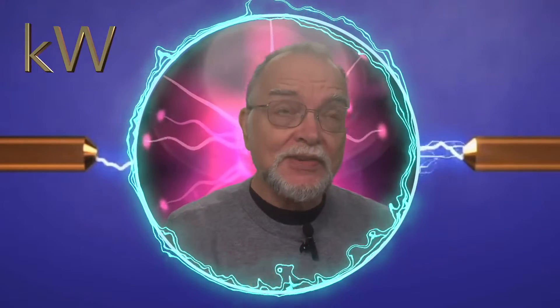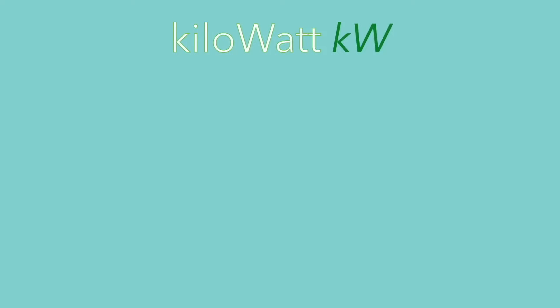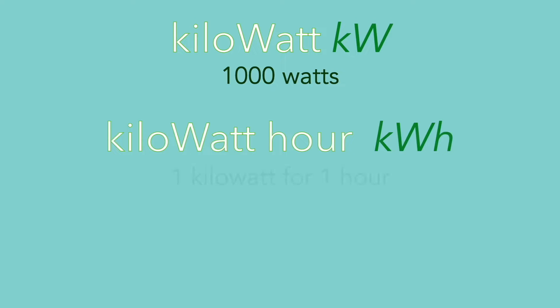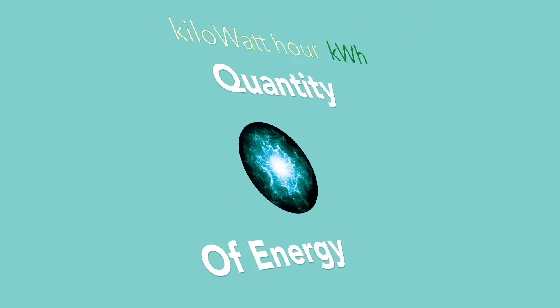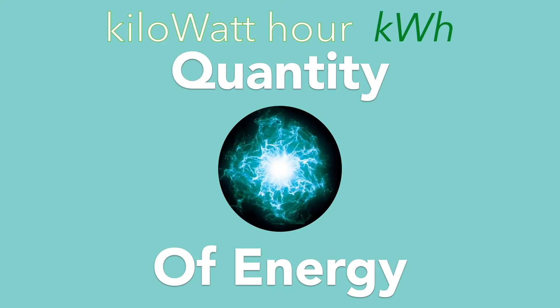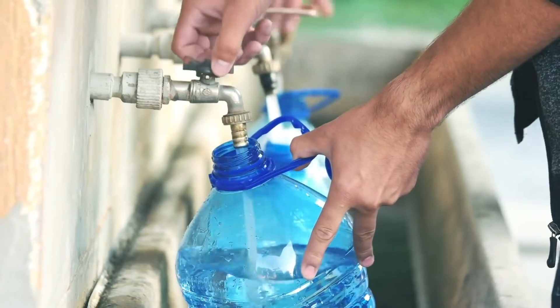So we have to look at kilowatts and kilowatt hours, which is how you measure energy. A kilowatt is 1,000 watts of power, and a kilowatt hour is one kilowatt running for one hour. Now, even though this has the word hour in it, it's not a measurement of time — it's a measurement of quantity.